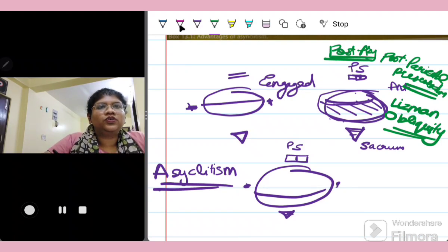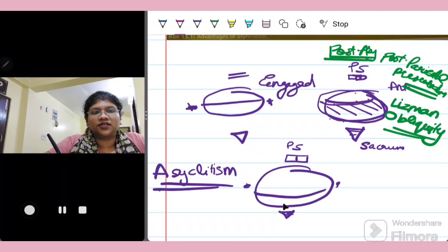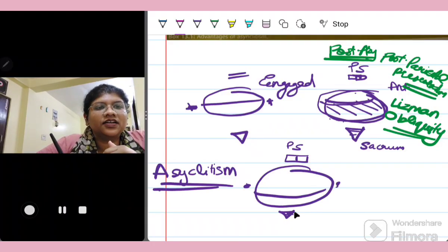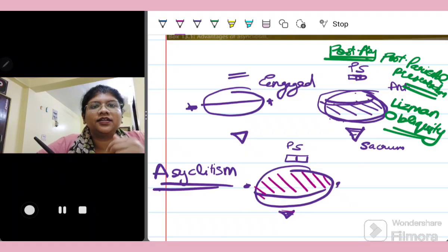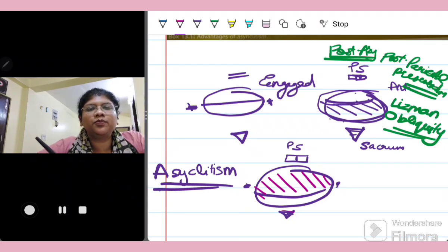Next scenario is when the sagittal suture deflects posteriorly. So it is going behind. When it is going behind, it is going towards the sacrum. So here the anterior part of the parietal bone, the anterior parietal bone becomes more prominent. So that is why it is known as the anterior asynclitism.